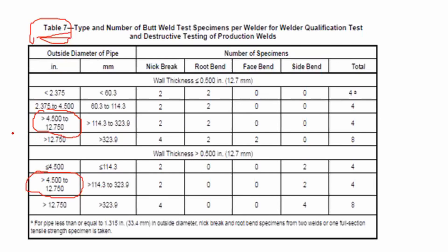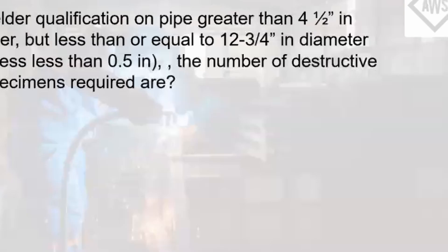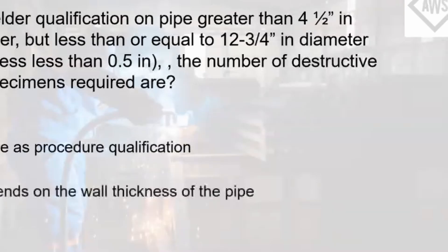You need to locate the pipe size in the table. For 4.5 inch to 12.75 inch with wall thickness under 0.5 inch, this is the governing row. The number of nick break tests is 2 and the number of root bend tests is 2, so the total required number of specimens is 4. Hence, the answer is letter A — 4.